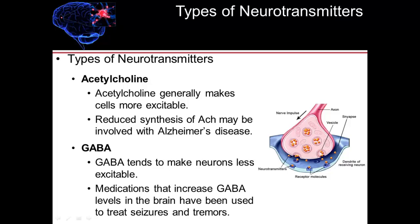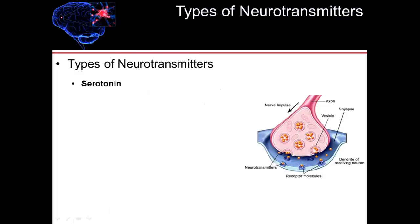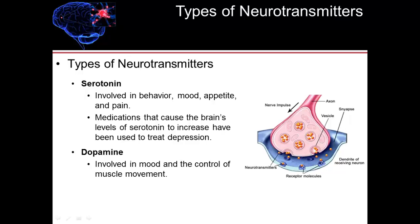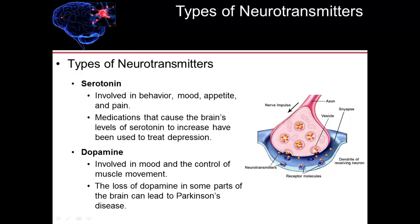GABA-like stimulation makes neurons less excitable and therefore decreases the incidence of seizures. Serotonin is a neurotransmitter involved in behavior, mood, appetite, as well as pain. Medications that increase the brain's level of serotonin have been used to treat depression. Dopamine is a neurotransmitter involved in mood and the control of muscle movement. A loss of dopamine in some parts of the brain can lead to Parkinson's disease. In other parts of the brain it can lead to depression, and in different parts it can lead to psychosis or overexcitability.